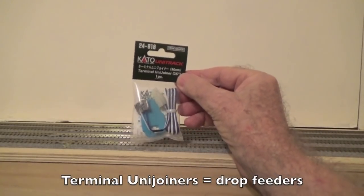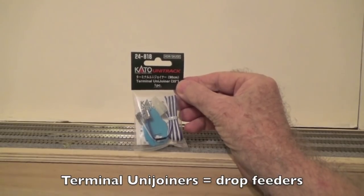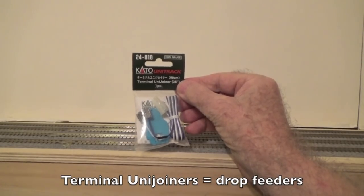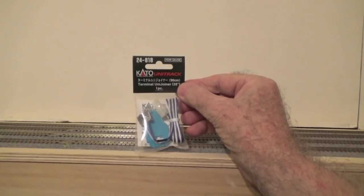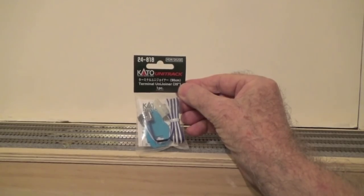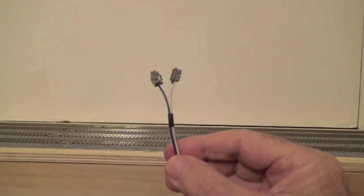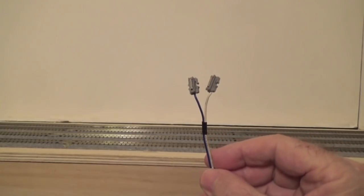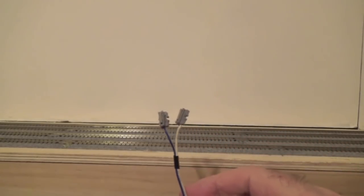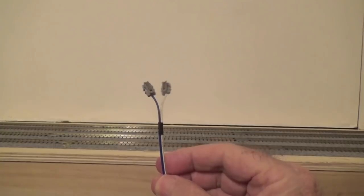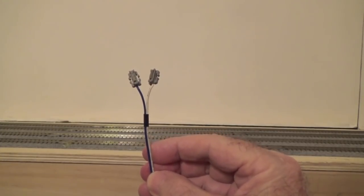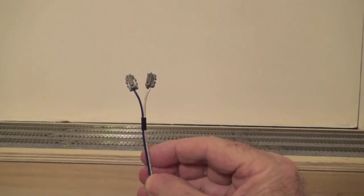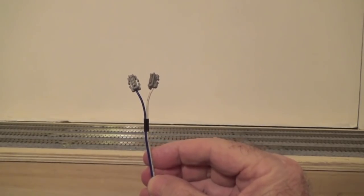Kato terminal unit joiners or drop feeders come in packs like this. Inside the pack you can see the blue plastic tool that I showed you a moment ago that you use to remove regular unit joiners before installing the terminal unit joiners. And here's what the terminal unit joiners look like after you take them out of the pack and straighten out the wires. Again the white wire and blue wire must be attached to the same rail all the way around the layout to avoid reversing the polarity of the rails thus causing a short.